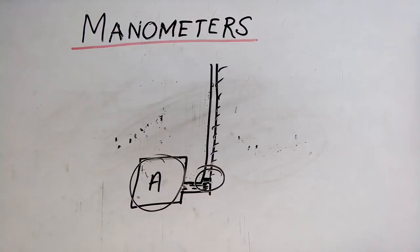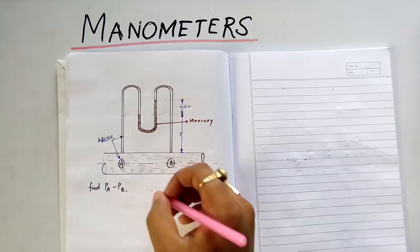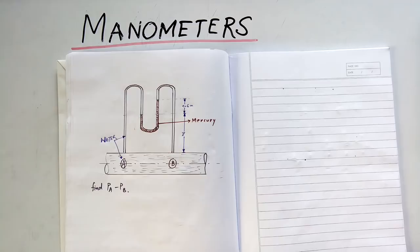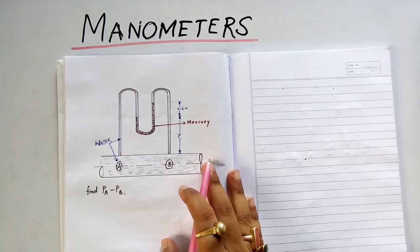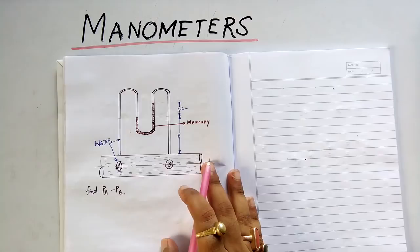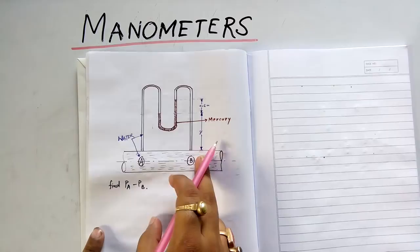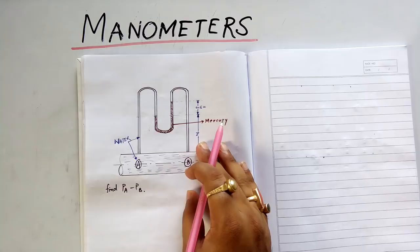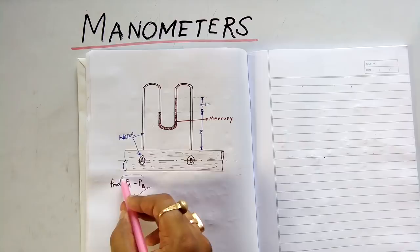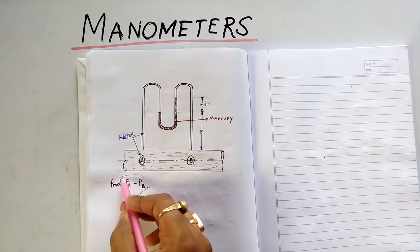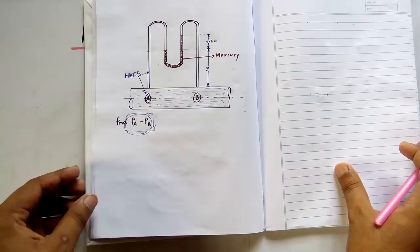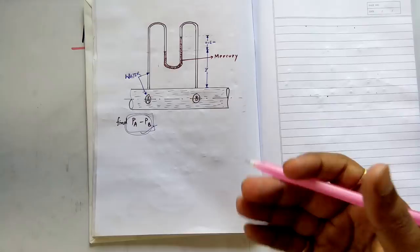Now I will solve two problems regarding manometers, which are very helpful to understand the concept. I will start with problems of continuous manometers, also called multi-tube manometers. There is a pipe carrying water with two points A and B. The pressure at these two points is not the same, and you need to find P_A minus P_B, the pressure difference between these two points.